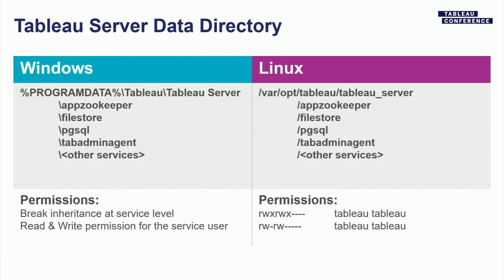Once we have services running, let's talk about the data directory — where all your data goes. It includes data we generate, all configuration files, log files, and the data you submit to Tableau Server. On Windows, we go by default to the Program Data directory and create our own subfolders there. On Linux, we go by default to a var/opt/tableau/tableau-server directory. You can modify those and specify your own if you want to go somewhere else.